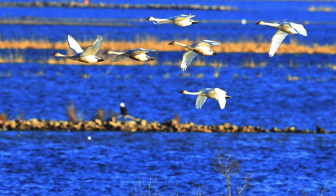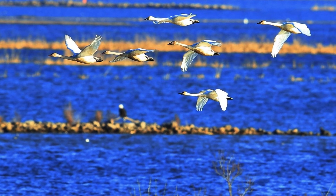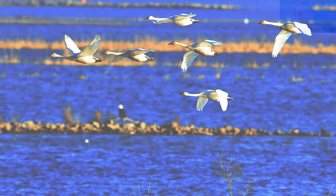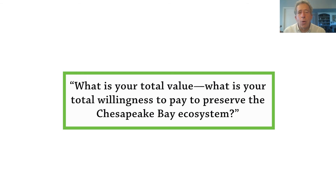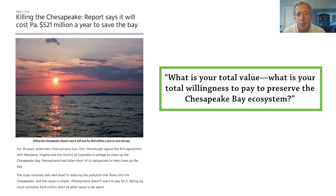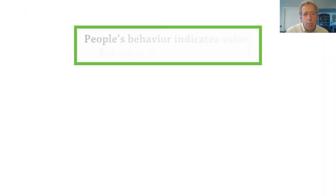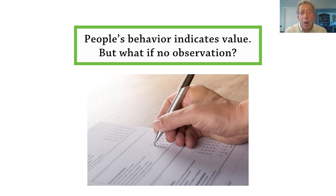I don't want to give the idea that the ecosystem has to be so remote that you never interact with it. We'll talk about methodologies to measure existence value, but you could think about a survey where you ask people: what is your total willingness to pay to preserve the Chesapeake Bay ecosystem? You'll get a number from that individual, and you'll have to figure out what question they're actually answering — whether it reflects use value, or whether some portion of that number represents an existence value component. When there is no observable behavior, the only thing you can do is ask people through some sort of survey methodology.